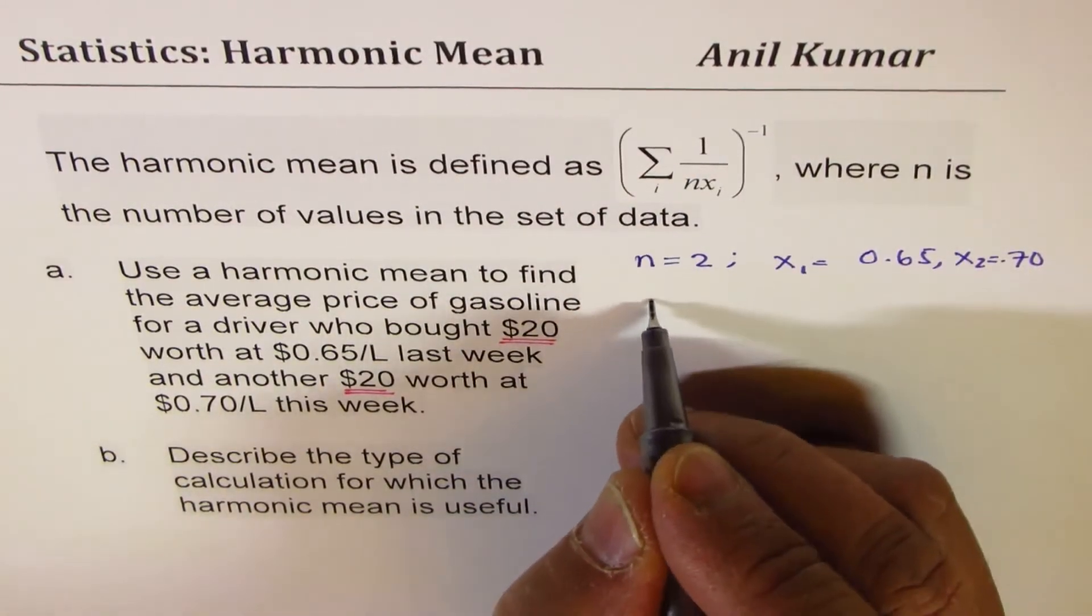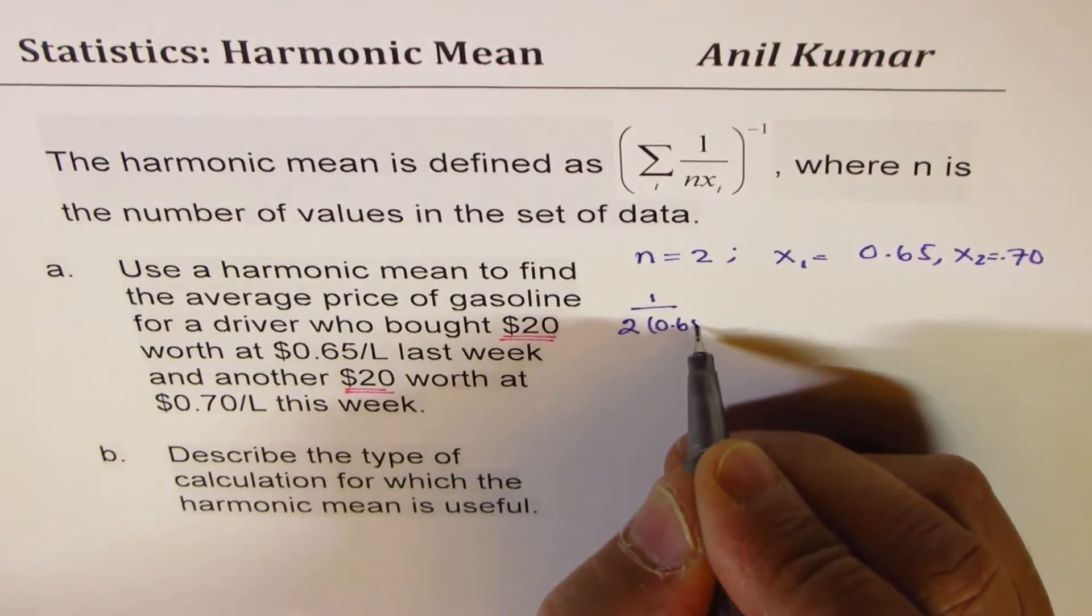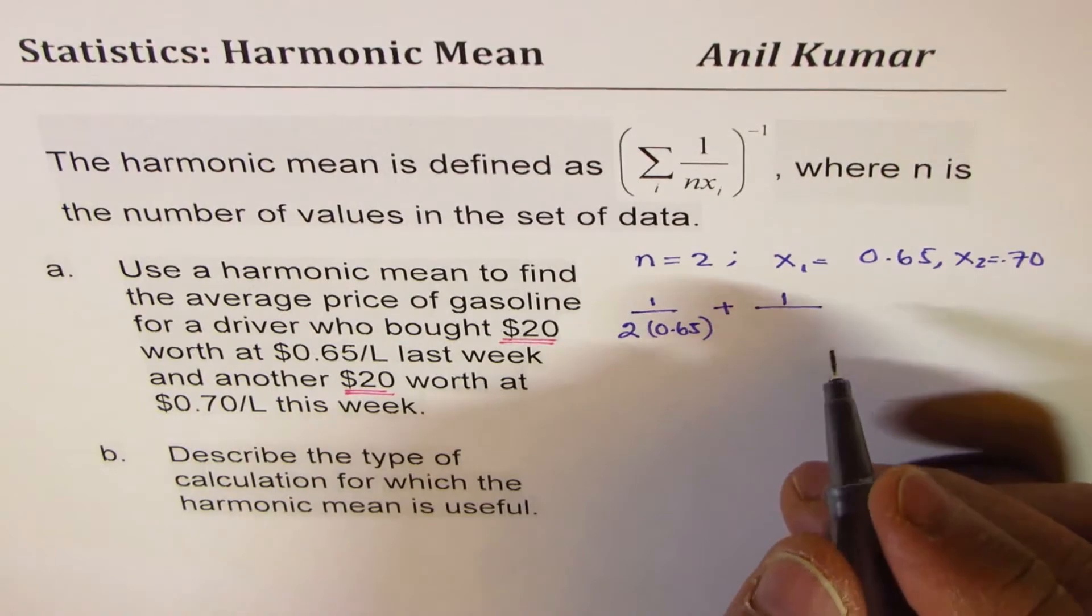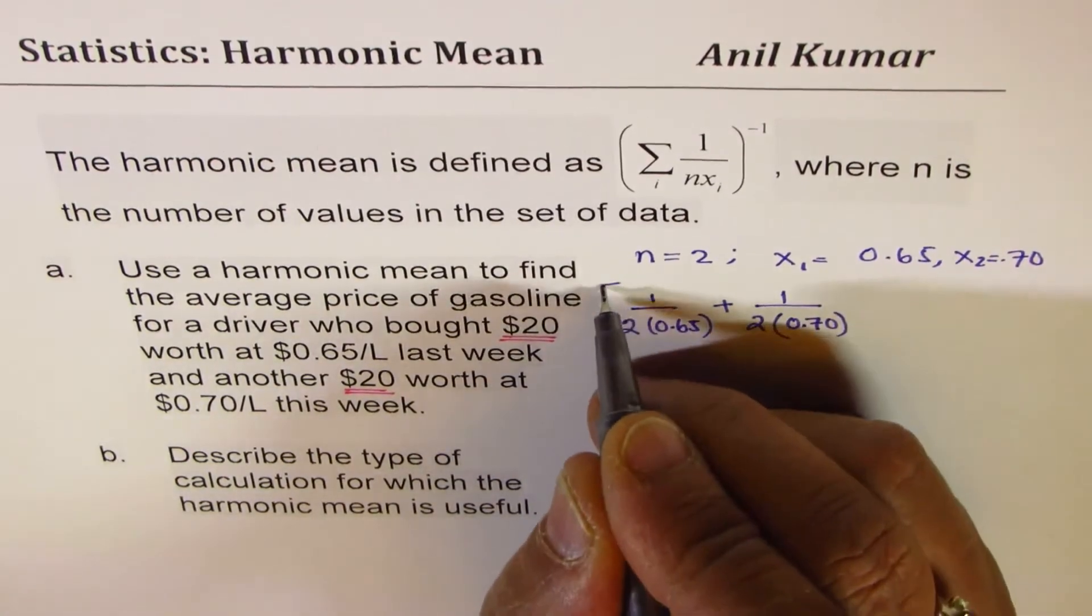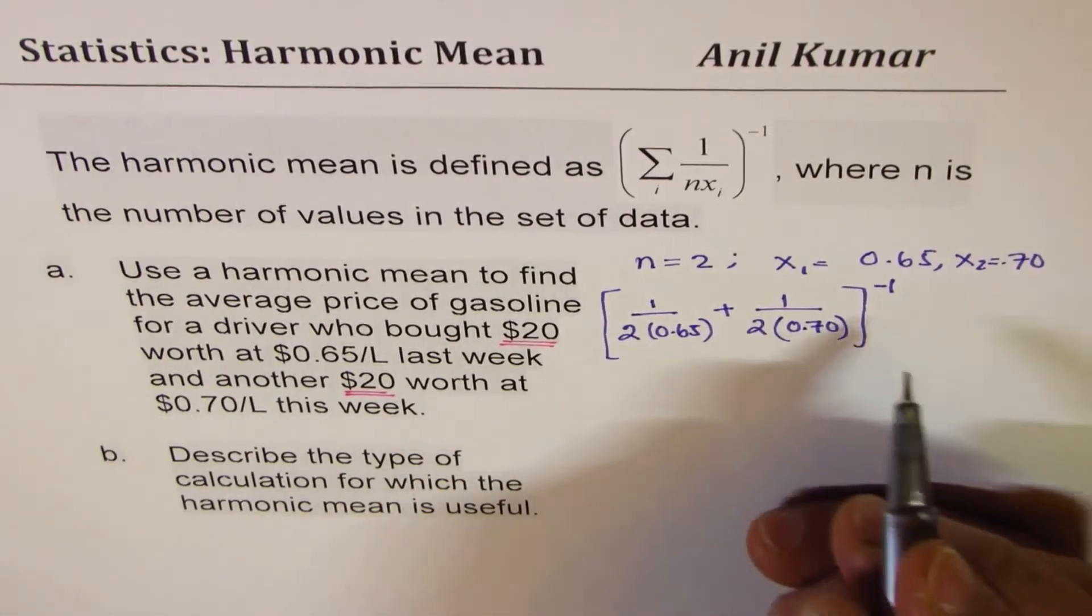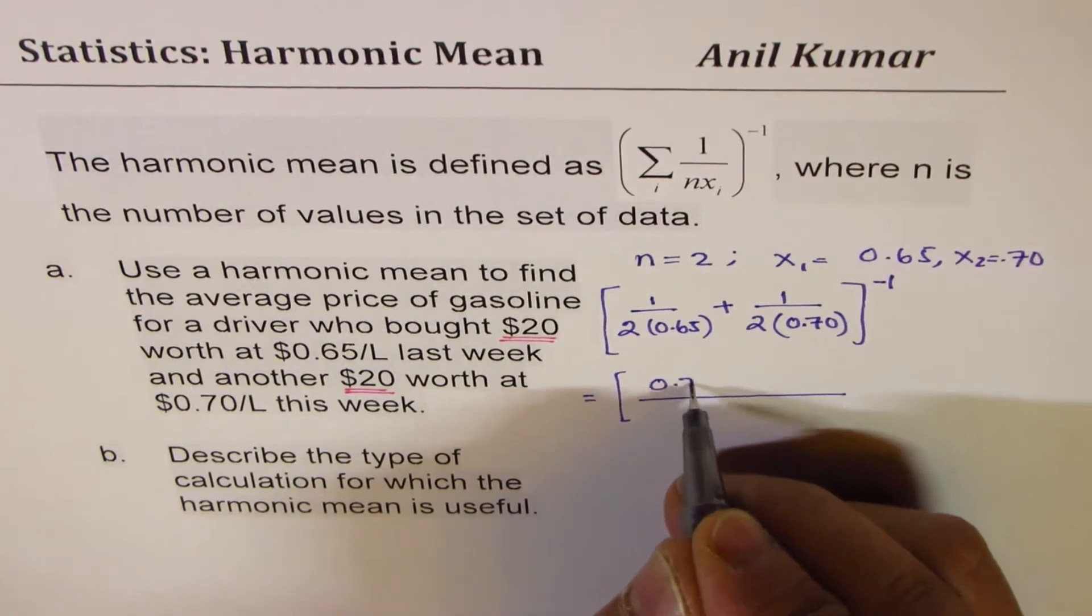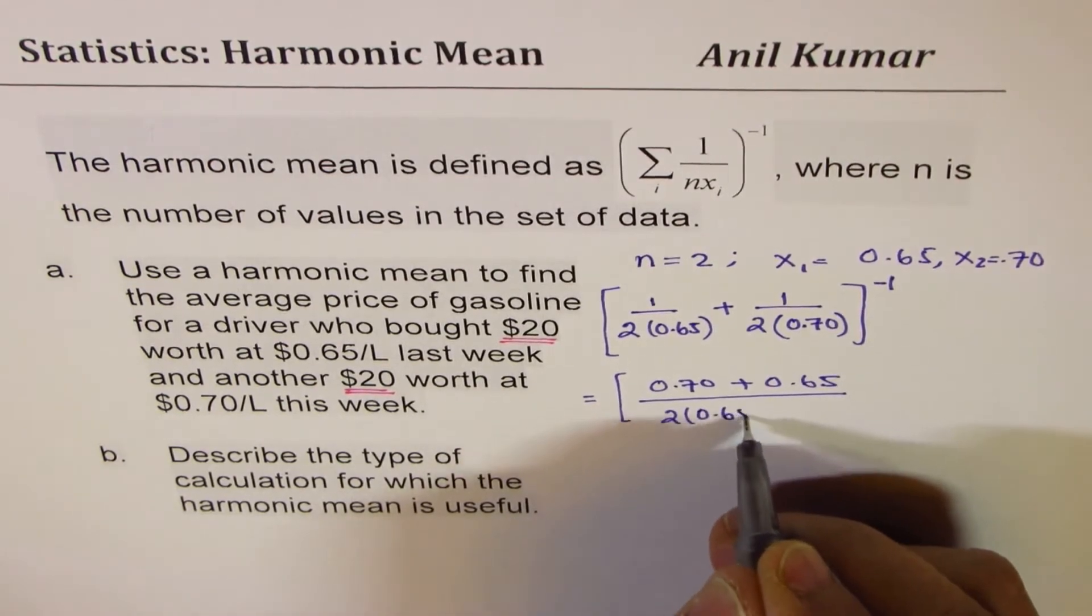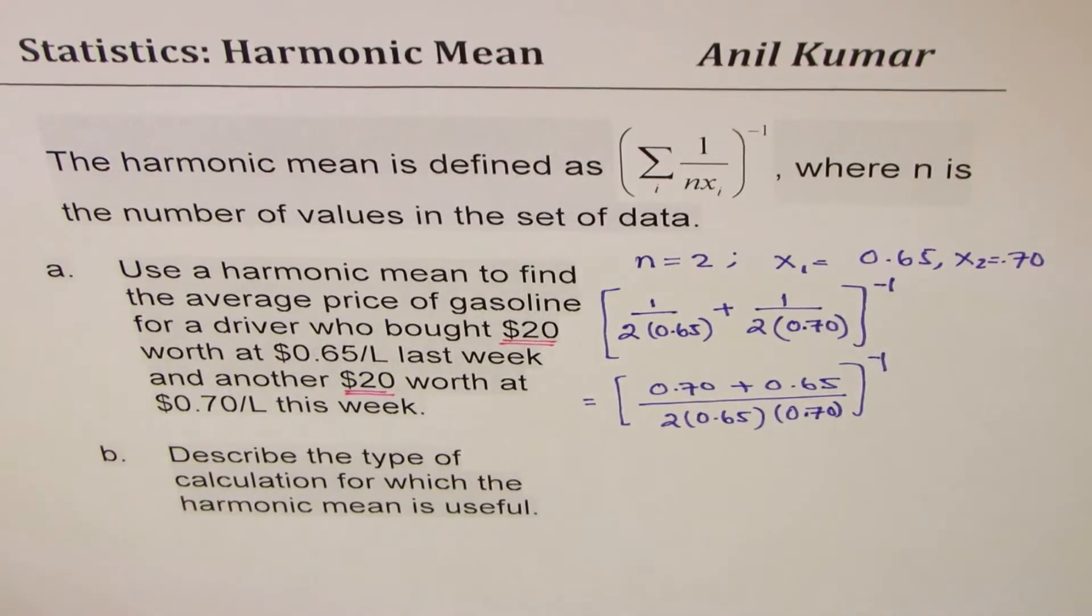So, applying the formula, we get 1 over 2 times 0.65, so we are writing in cents, plus 1 over 2 times 70. And everything to the power of minus 1. Now, you could take a common denominator and solve this. So, we have 0.70 plus 0.65. The denominator will be 2 times 0.65 times 0.70, to the power of minus 1.